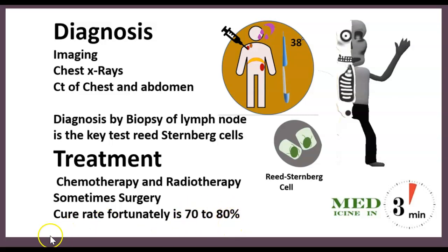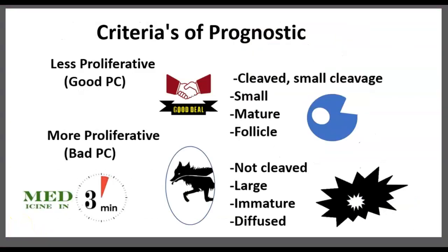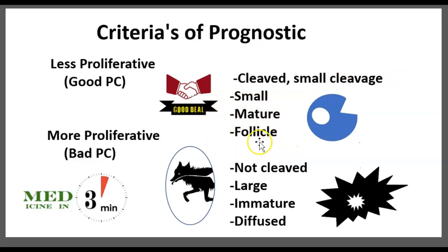You have a good prognosis if the cells are cleaved or have a small cleavage, if they're still small, if the cells are mature, and if there is a presence of follicles. You have a bad prognosis if the cells are not cleaved, if they're large, if they're immature, and worst case scenario, if they're diffuse.